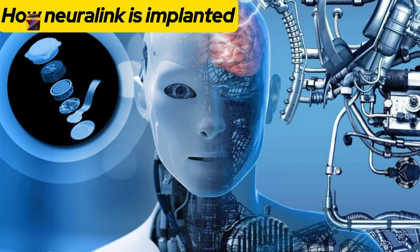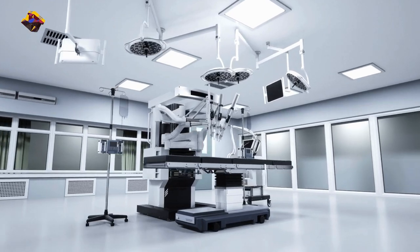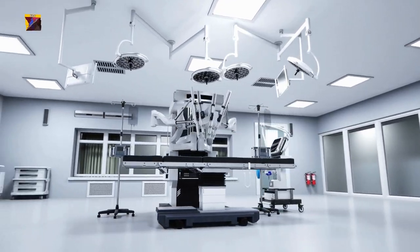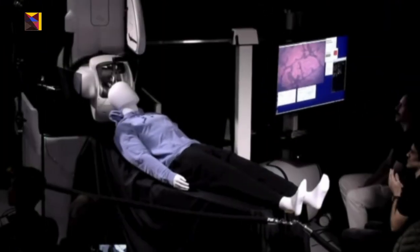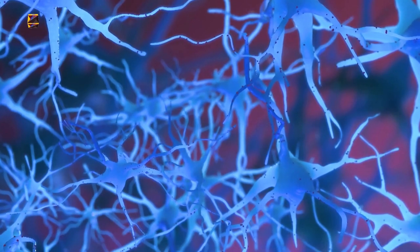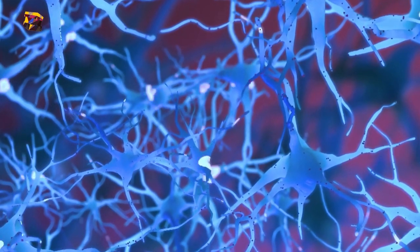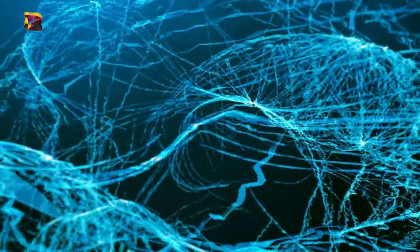The implantation is done using a robot designed by Neuralink. This robot can insert the electrodes with extreme precision, minimizing damage to brain tissue. The electrodes are incredibly thin, about a quarter the diameter of a human hair, allowing them to be inserted with minimal disruption.